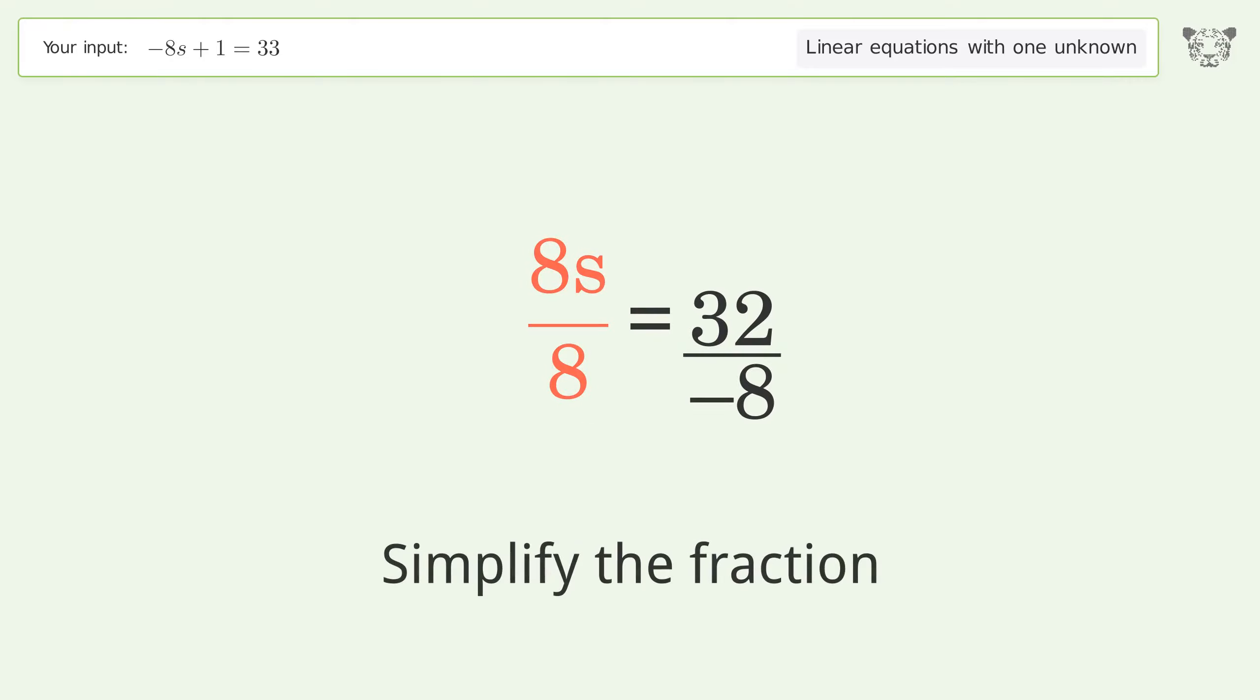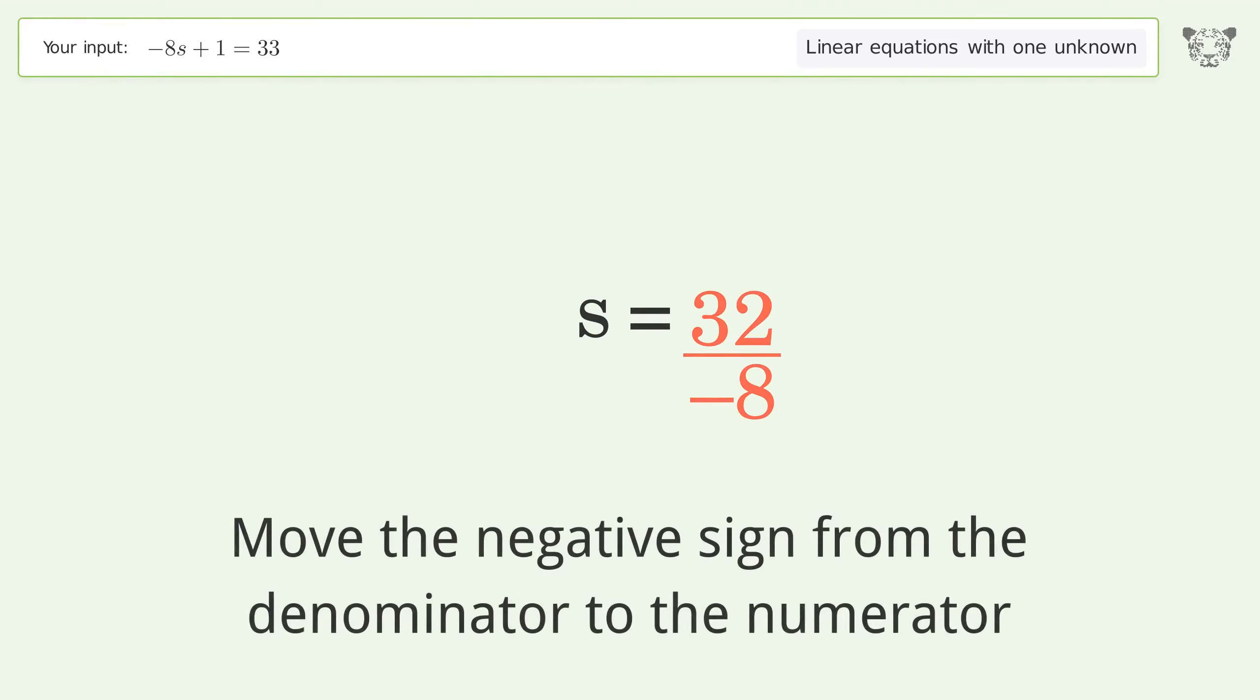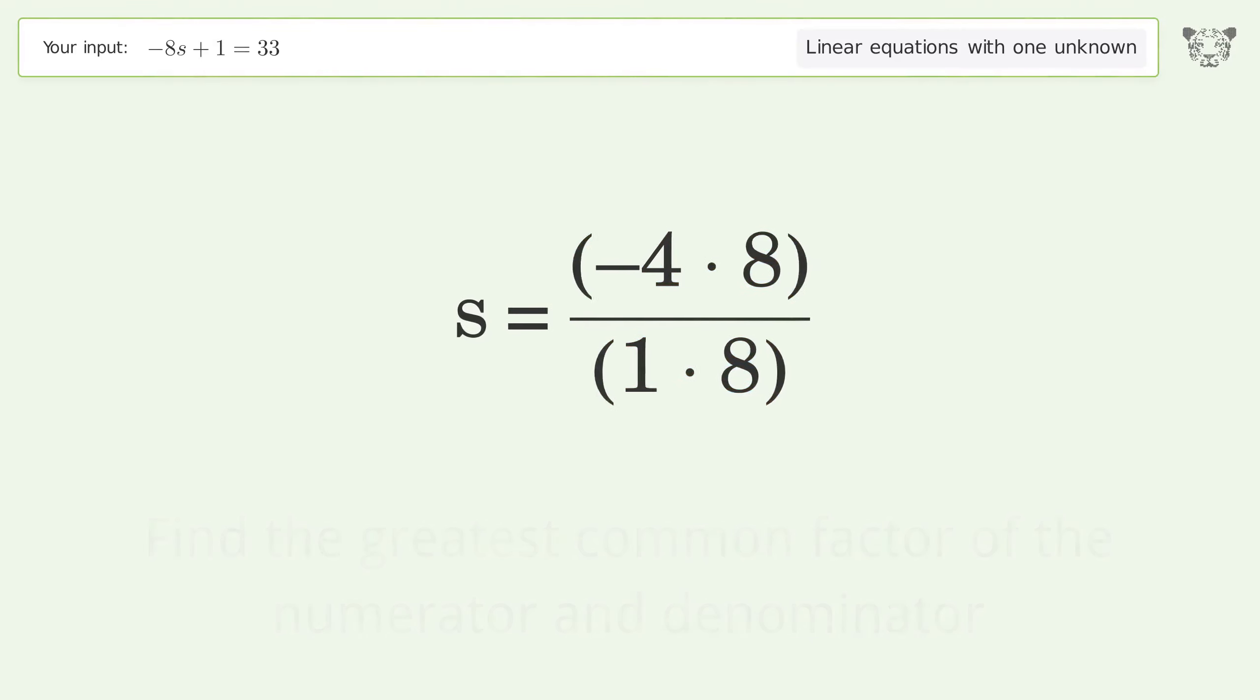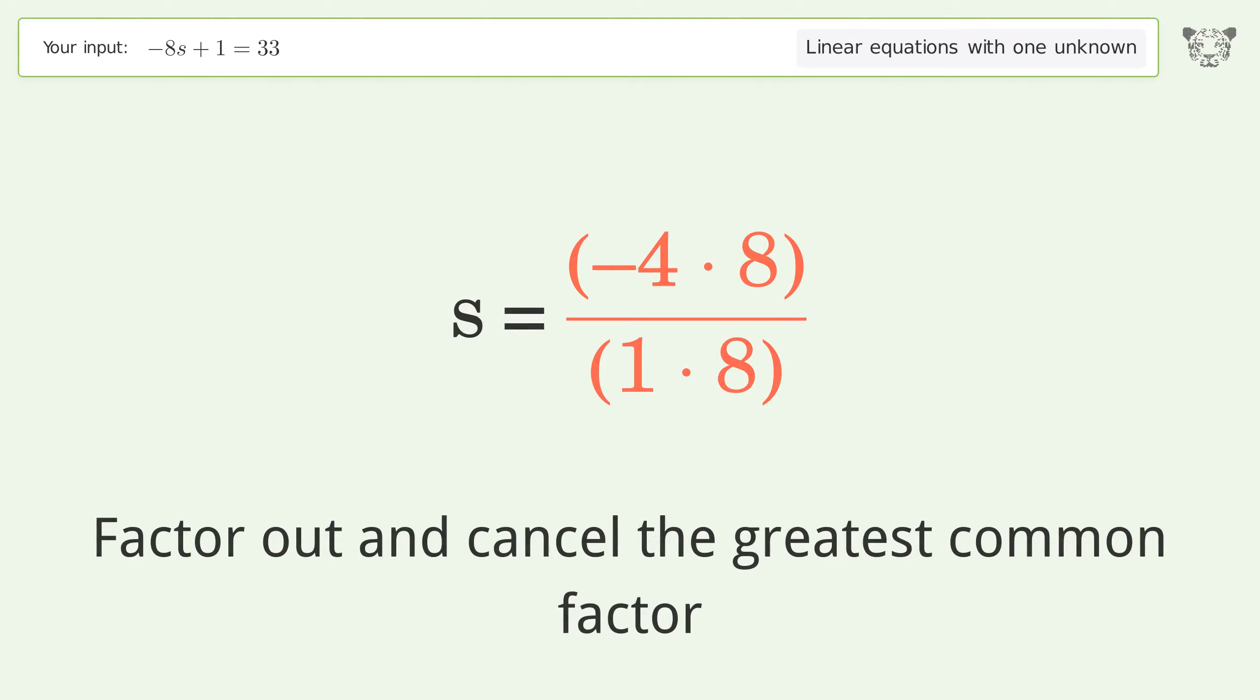Simplify the fraction. Move the negative sign from the denominator to the numerator. Find the greatest common factor of the numerator and denominator. Factor out and cancel the greatest common factor.